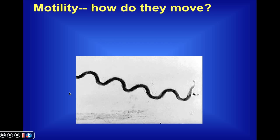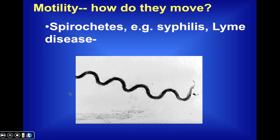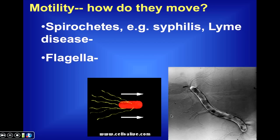What about motility? Many species of bacteria can move about their environment in several different ways. For example, there are some bacteria referred to as spirochetes, which have a spiral shape. Examples include the bacteria responsible for syphilis and Lyme disease. They essentially contract and relax over and over again, and as a result, they corkscrew their way through their environment or through living host tissue.